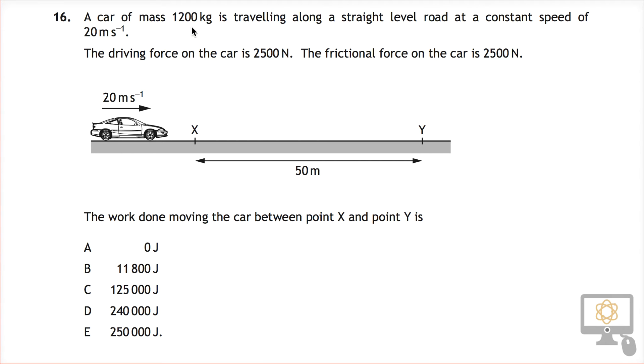It says the car of mass 1200 kilograms is traveling along a straight road with a constant speed of 20 meters per second. The driving force is 2500 newtons and the frictional force is 2500 newtons. So first of all, what that means is that there are two forces horizontally acting on the car: a driving force going forward of 2500 newtons and a frictional force in reverse of 2500 newtons. That means that our unbalanced force F is equal to zero, which is why it is moving at a constant speed of 20 meters per second.